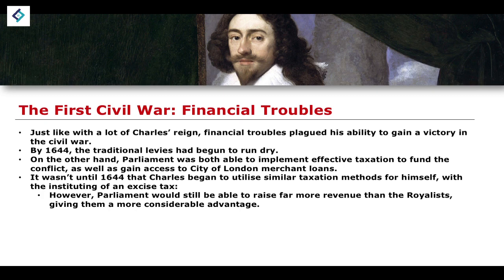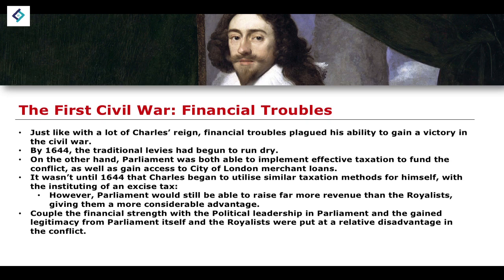Overall, Parliament was able to raise more revenue than the Royalists, giving them a considerable advantage. They raised more revenue due to access to the larger and more wealthy population, as well as the City of London merchants. Coupled with relatively strong political leadership — at least up until the death of John Pym — they gained legitimacy from acting under the auspices of Parliament, which further disadvantaged the Royalists. Control of London also put them at a significant additional advantage.